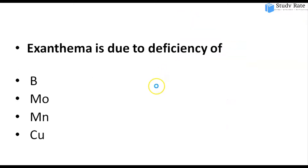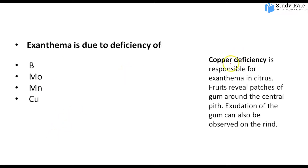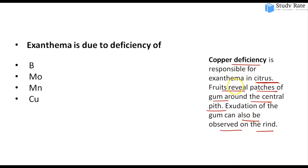Biological nitrogen fixation is important for maintaining nitrogen in the ecosystem and for assimilating amino acids. Fourteenth question: Exanthema is caused by the deficiency of which element — boron, molybdenum, manganese, or copper? The answer is copper. In citrus, copper deficiency causes exanthema, a condition with patches of gum around the central pit and exudation of gum observed on the wind.